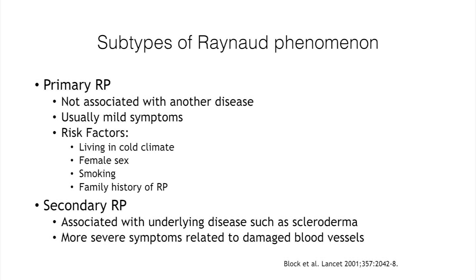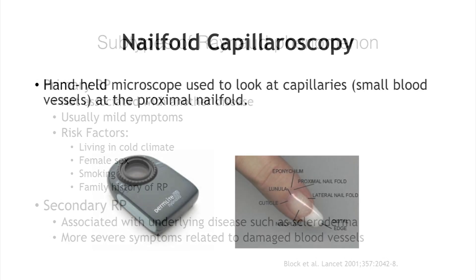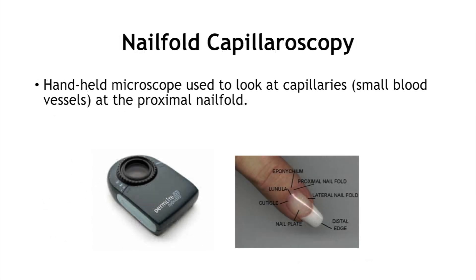Secondary Raynaud's is associated with an underlying disease such as scleroderma, and usually the symptoms are more severe, related not just to vasospasm of blood vessels but actually to damaged blood vessels as well.